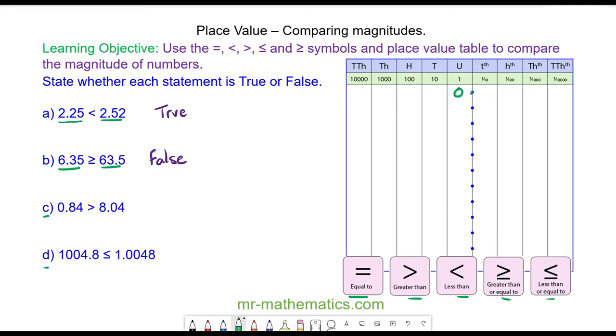Okay, so 0.84 and 8.04. We have eight units here, no units here. So the eight is bigger than the zero. So this again is false. 8.04 is bigger than 0.84.